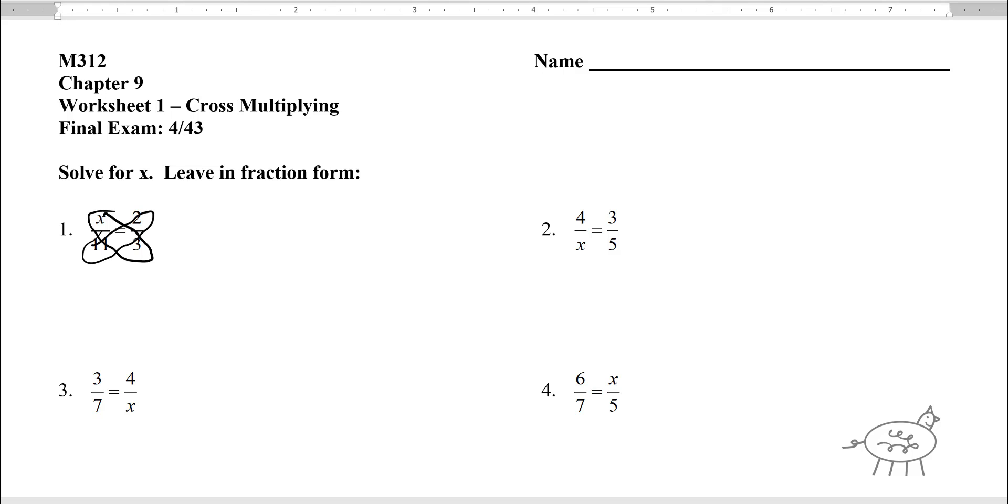So if I multiply that, the first one is going to be 3 times x is 3x, and 11 times 2, I'm going to show my work, 11 times 2. So you get 3x is equal to 22.